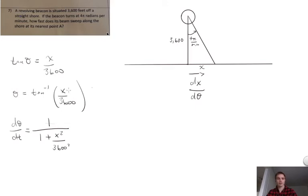Okay, so we can't forget to do the derivative of the inside as well. So the derivative of the inside is 1 over 3600 times dx dt. Because it's implicit differentiation, we have to do that. So let's see if we can simplify this.